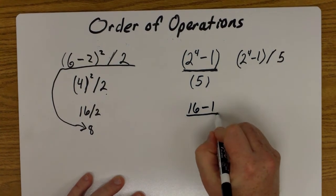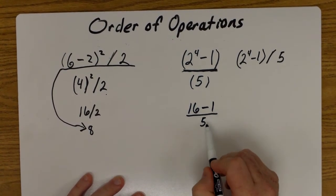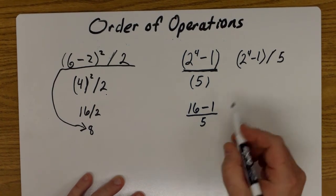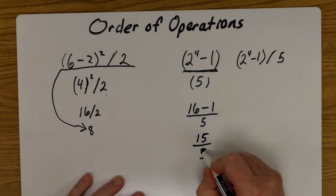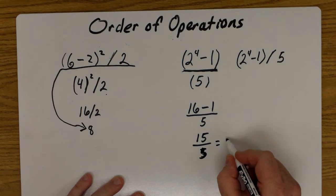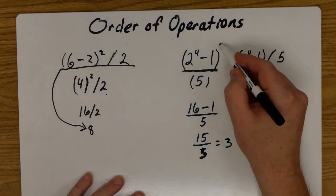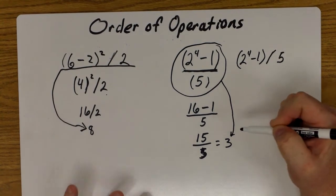So 16 minus one will give you 15 divided by five, and then 15 divided by five is going to give us three. So this expression up here simplifies to just three.